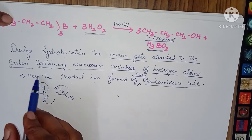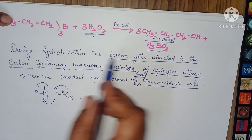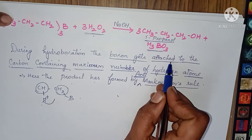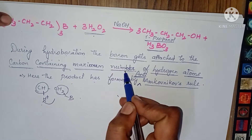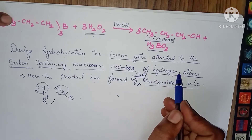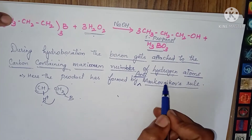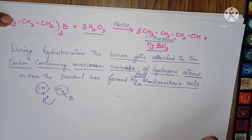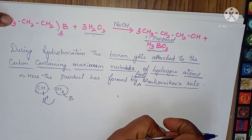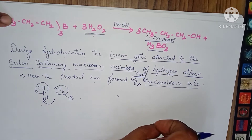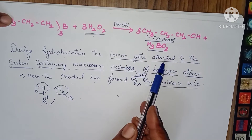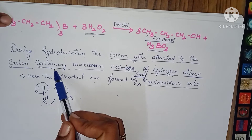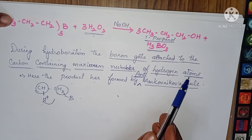Now here one speciality I would like to tell you. During hydroboration, the boron gets attached to the carbon containing the maximum number of hydrogen atoms. Somewhere we have learned about this — yes, exactly — Markovnikov's rule. Markovnikov's rule means wherever carbon has fewer hydrogen atoms, that is where the electrophile attaches. But here, boron attaches to the carbon containing the maximum number of hydrogen atoms.